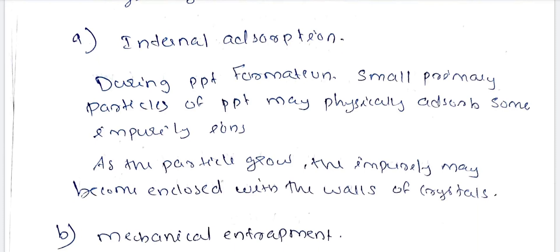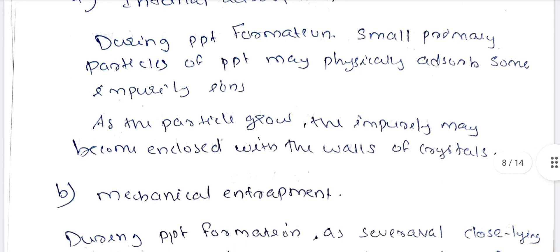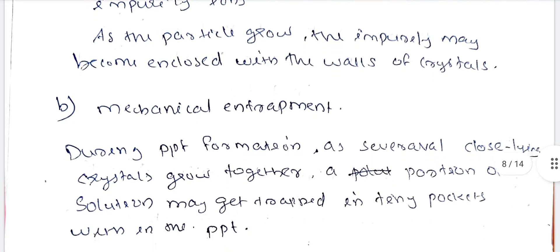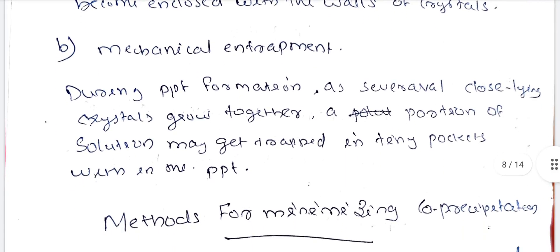Internal adsorption: during precipitate formation, small primary particles of precipitate may physically absorb some impurity ions. As the particles grow, the impurity may become enclosed within the walls of crystals. Mechanical entrapment: during precipitate formation, as several close-lying crystals grow, a portion of the solution may get trapped in tiny pockets within the precipitate.